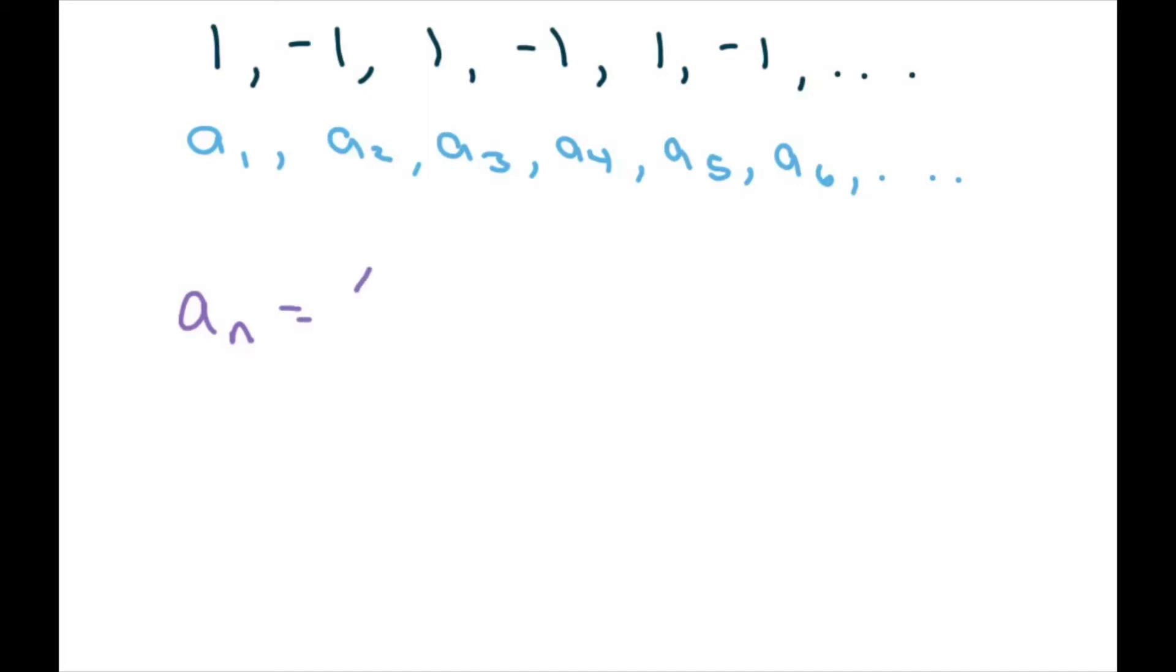You're going to write negative one to the n minus one. Let's go ahead and use parentheses instead. Now this is one you need to memorize. It's either going to be this one or it's going to be this one.